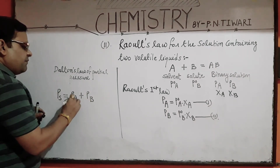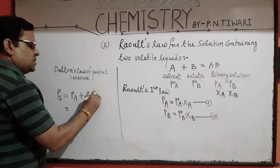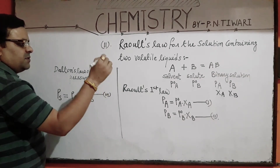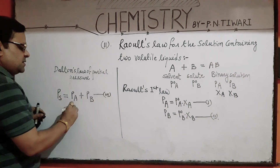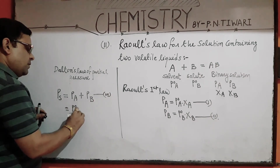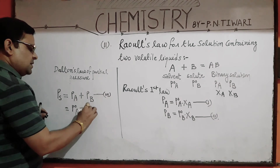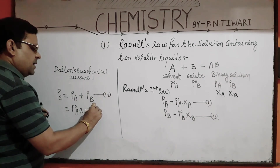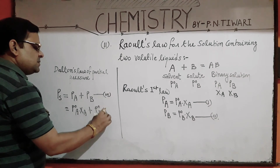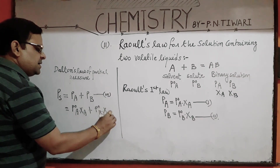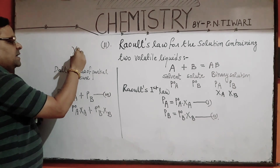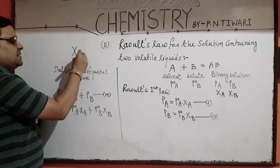By substituting the values of PA and PB into equation three, from equation one and equation two: the value of PA is P0A into XA, and the value of PB is P0B into XB. Note that mole fraction is sometimes represented by the Greek letter zeta, as zeta A and zeta B.